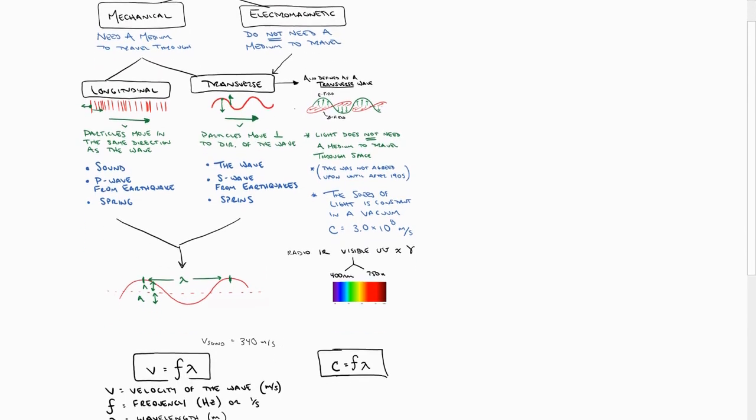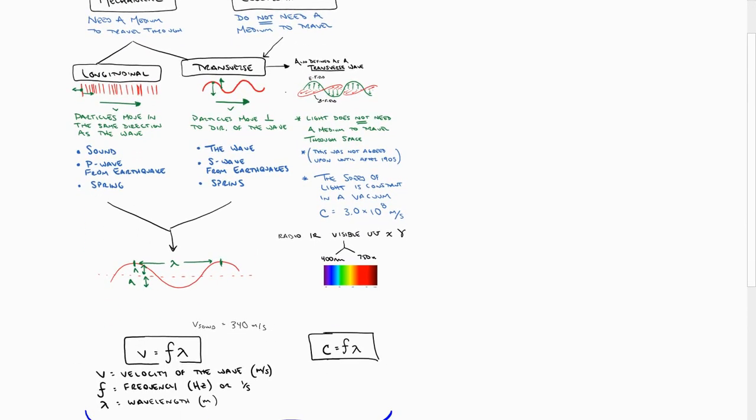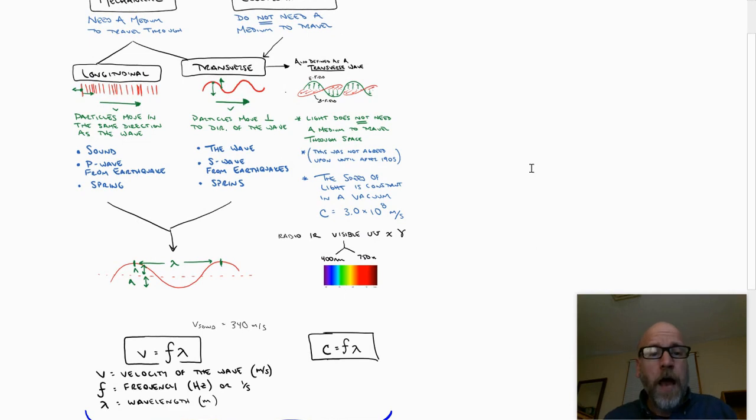Seemed easy. Oh, because I think it is for students of your caliber. However, there's a lot of vocabulary words mixed in here. Mechanical, electromagnetic, medium, longitudinal, transverse, visible, spectrum, and two new formulas. Velocity is frequency times wavelength, and the speed of light is frequency times wavelength.